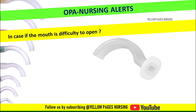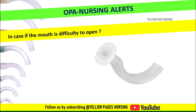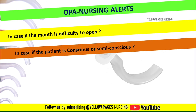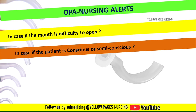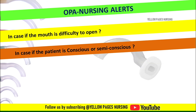Practical nursing alerts for OPA insertion: if the mouth is difficult to open, use a nasopharyngeal airway instead. If the patient is conscious or semi-conscious, they may activate the gag reflex, resulting in vomiting or laryngospasm. If gagging or vomiting occurs, remove the airway immediately to prevent aspiration. If needed, hyper-oxygenate the patient and suction the pharynx.